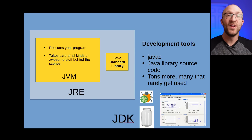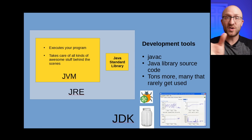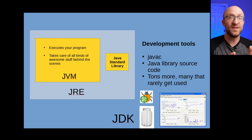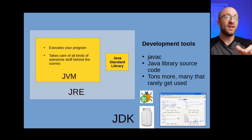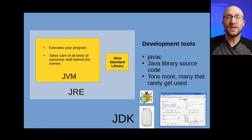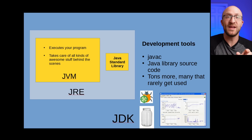So overall, the JDK has everything that you need to create, modify, test, debug, and run your Java programs. The JRE is a part of the JDK that allows you just to run your Java programs, and that includes the Java Standard Library and the JVM. And the JVM is what takes your Java program's class files and all the Java Standard Library class files, loads them up into memory, and executes your program.